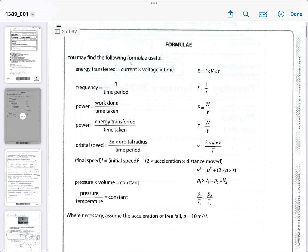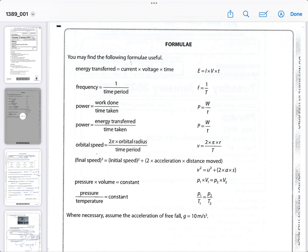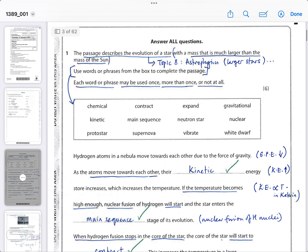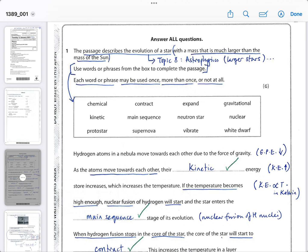I've had some requests for the November 23 paper two, and that's in the process of being produced before the mock exams hopefully. Straight away, question one is on astrophysics, so I've put the answers in. The passage describes the evolution of a star with a mass that is much larger than the mass of the Sun. So larger stars, they die faster. The larger the star, the hotter they get. This is the underlying concept that you need to be aware of.